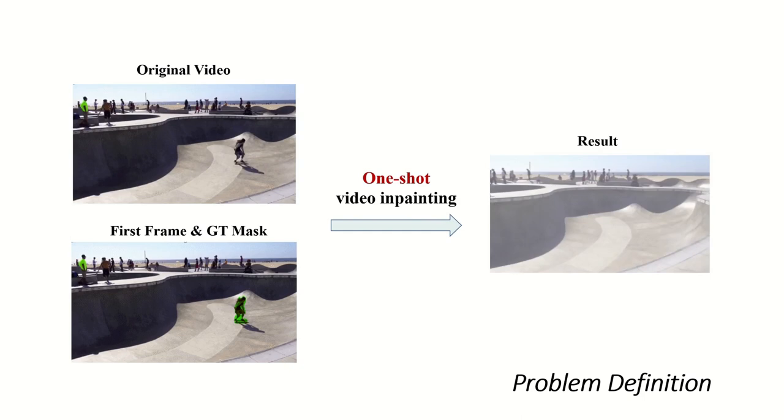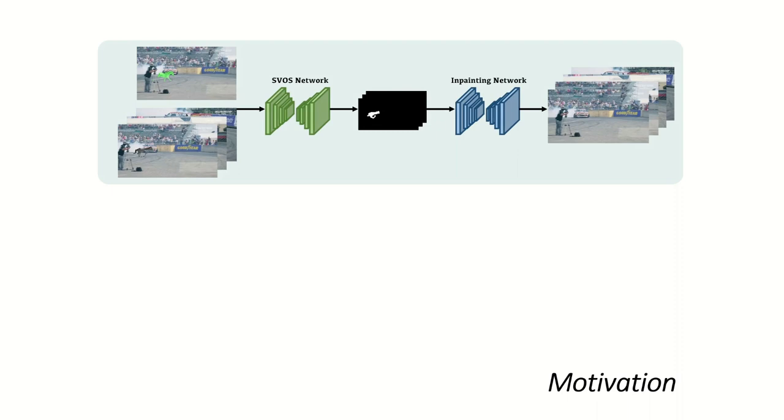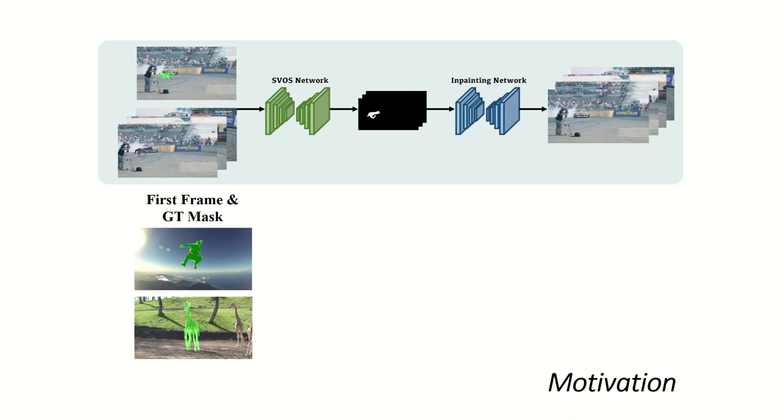One-shot video inpainting seeks to fill in corrupt regions of a video using just one annotated first frame. A simple solution is to combine a video object segmentation model with traditional inpainting methods and use the resulting predicted target masks to perform video inpainting.